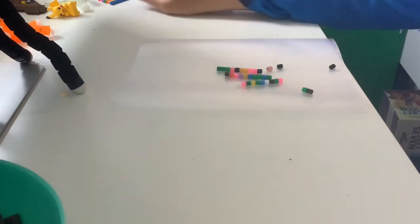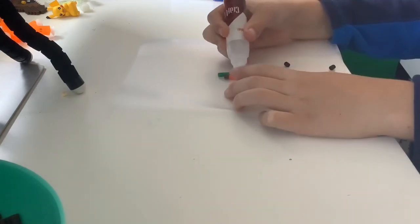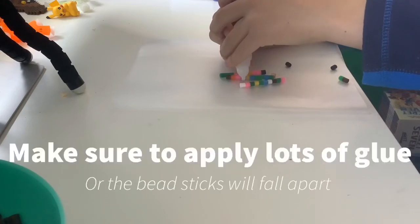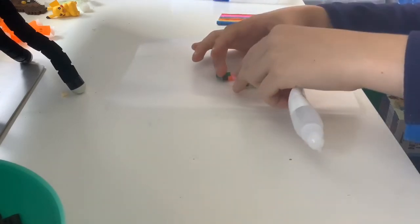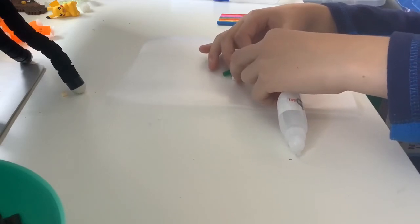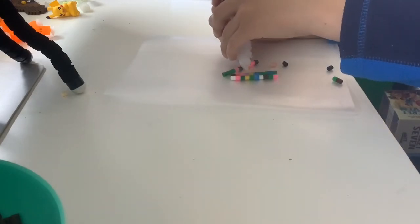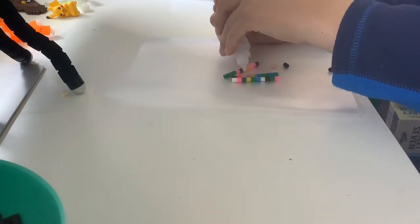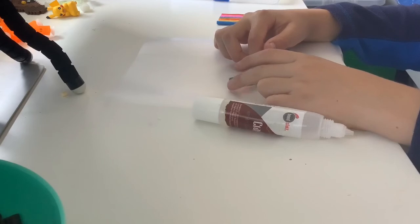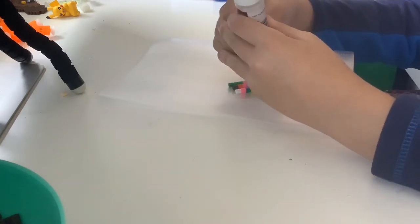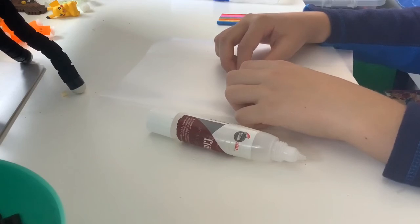So to turn these sticks into a wall like this, all we have to do is apply glue on the side, and then stick them together. And then just repeat the process. There you go.